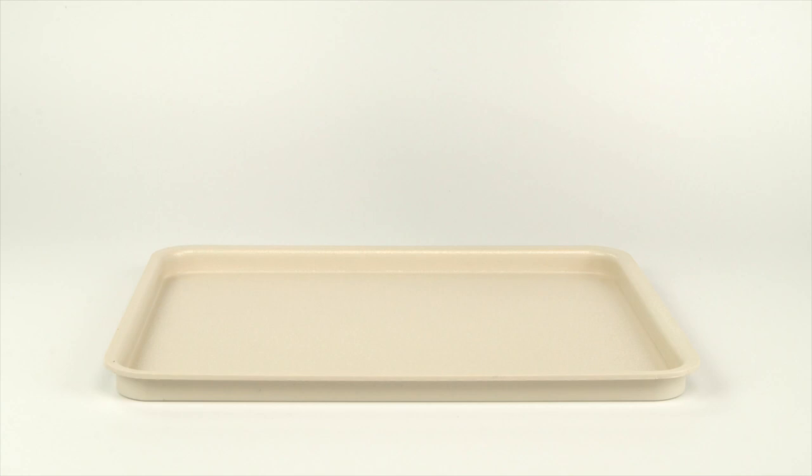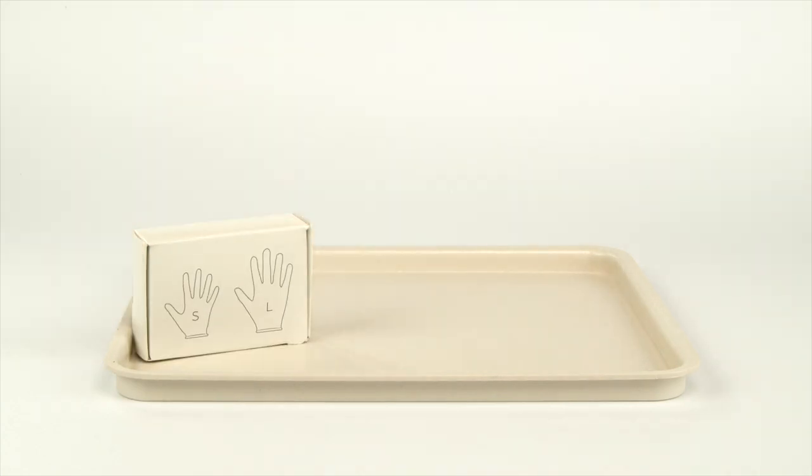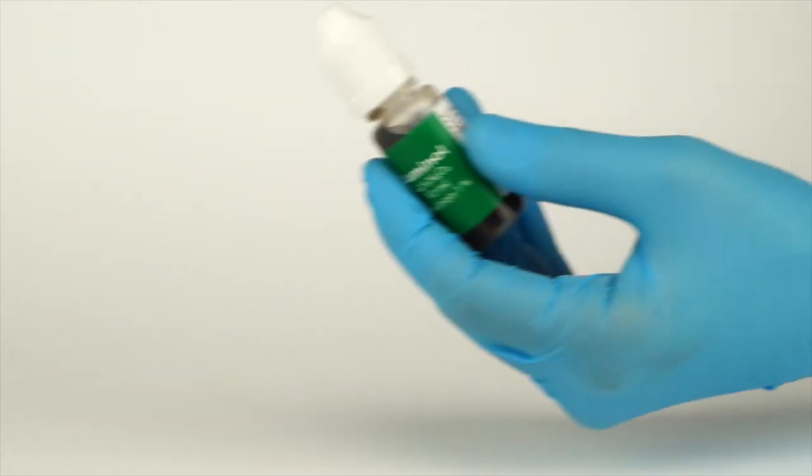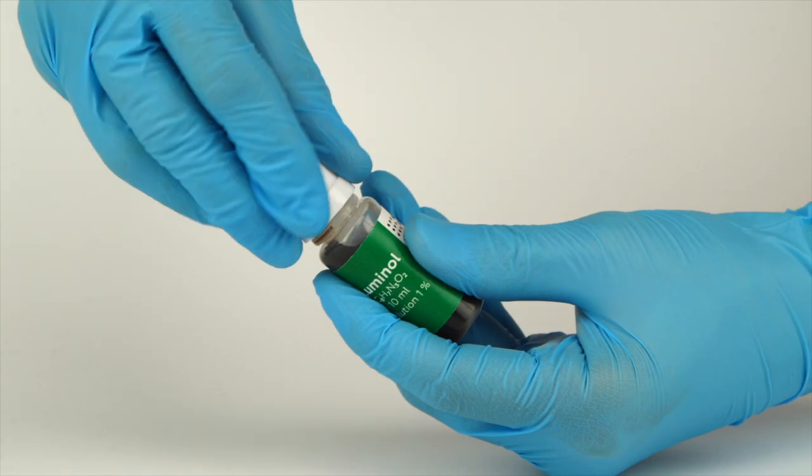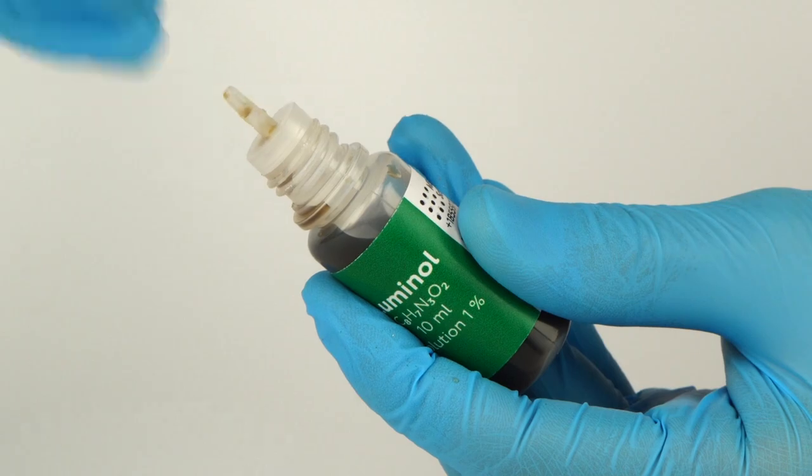Perform this experiment on a plastic tray to contain any possible spills. Don't forget to put on protective gloves and goggles before doing the experiment. To open a bottle containing a reagent, push the cap down and turn it. Carefully pierce the bottle nozzle using an unbent paperclip.